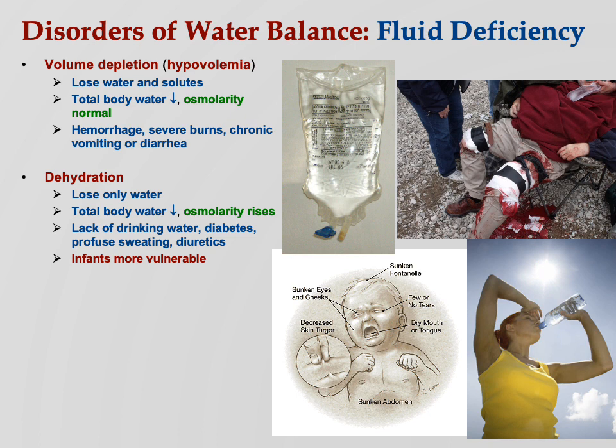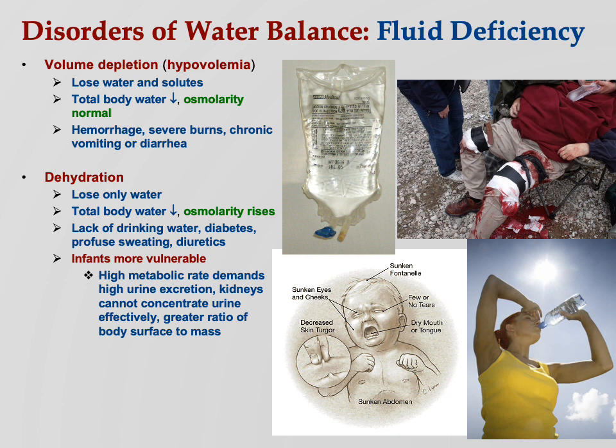Infants are more vulnerable to dehydration for a lot of reasons: they have a higher metabolic rate, they make more urine, kidneys are not as efficient yet, and there's the whole Hoff's Law — the ratio of body surface area to mass.